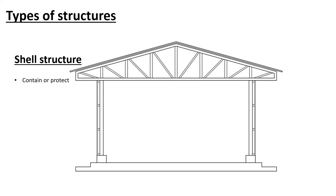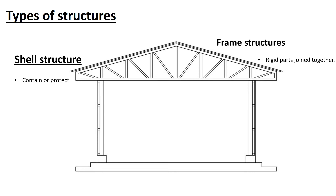The next type is a frame structure. Frame structures are made of rigid parts joined together to form a framework. These parts are called members. For example, a bridge is a frame structure that spans a gap.